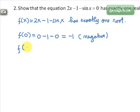And let us compute f of π over 2. 2 times π over 2 is π minus 1, and sin π over 2 is 1. Since π is 3.14 something, then if we subtract 2 from π, we still have a positive number. So this is positive.